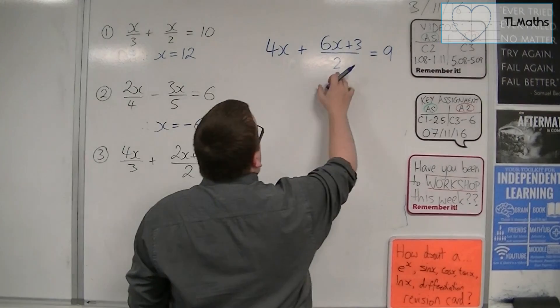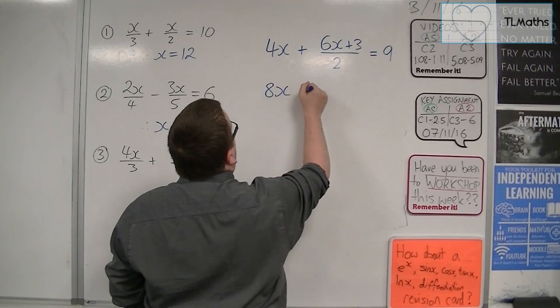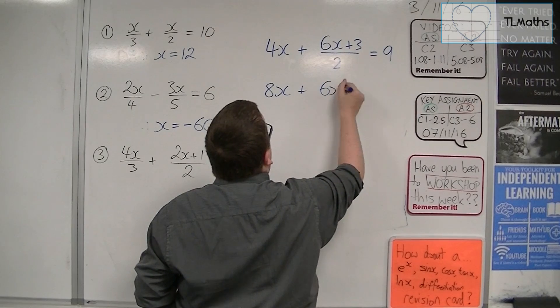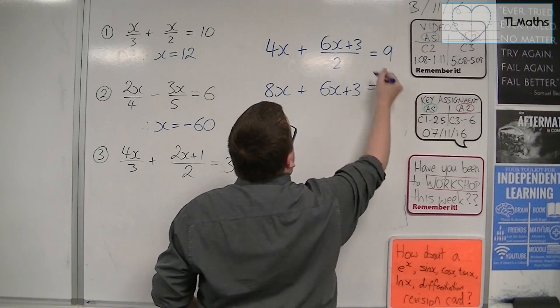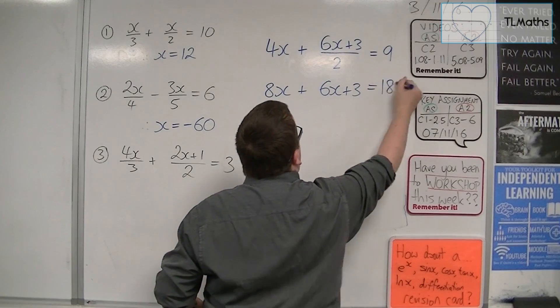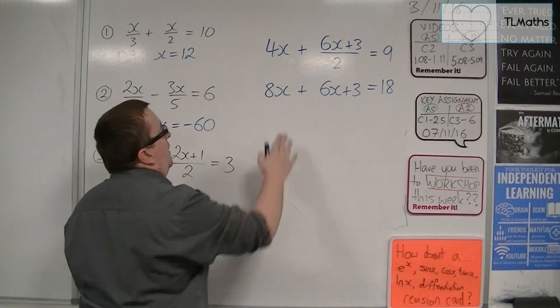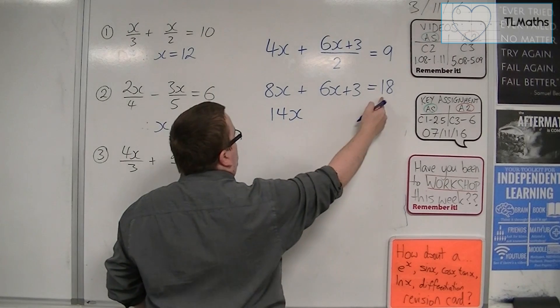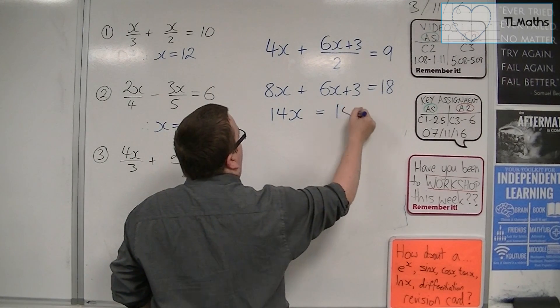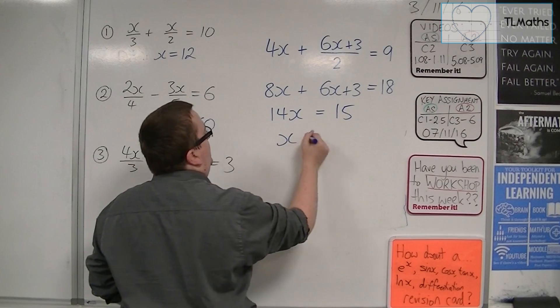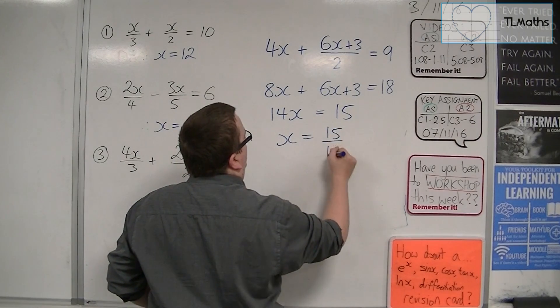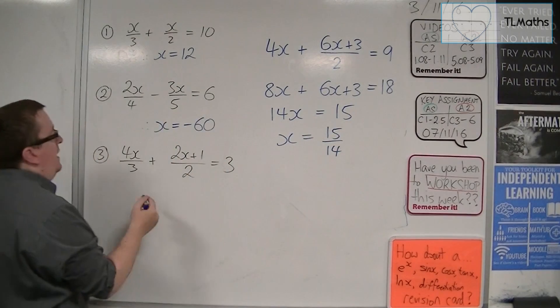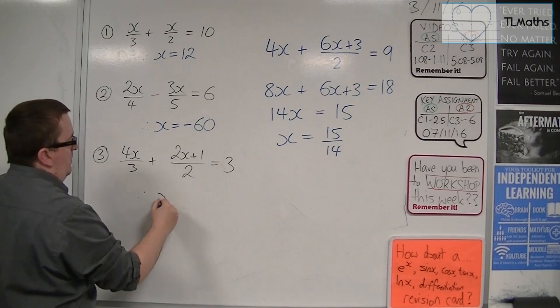Now, I can multiply everything by 2. So 8x. The 6x plus 3 is what's left over. And I multiply the 9 by 2, so I get 18. So 8x and 6x make 14x. I can subtract 3 from both sides, and I'm going to get 15. And so x is equal to 15 over 14. And that is the answer to number 3.